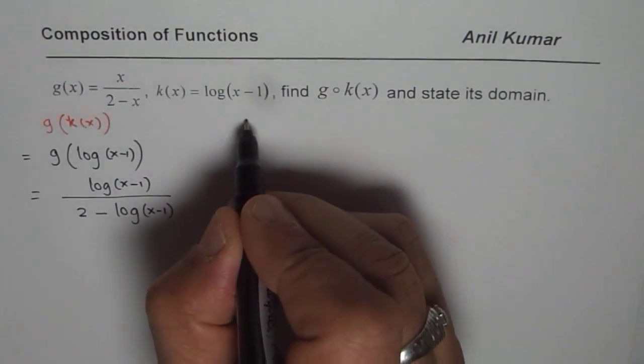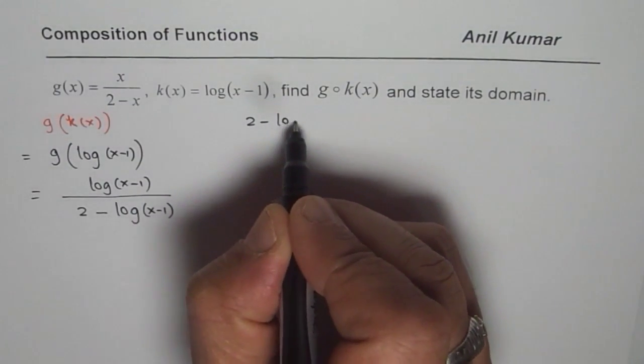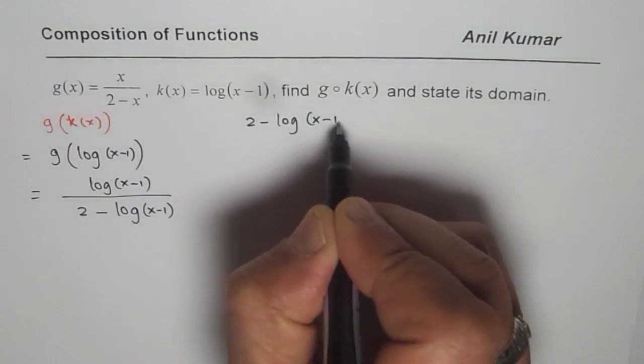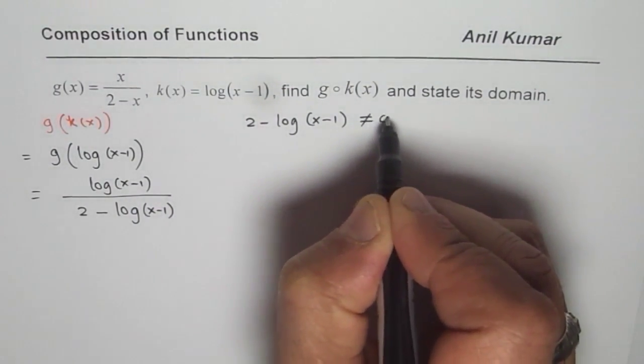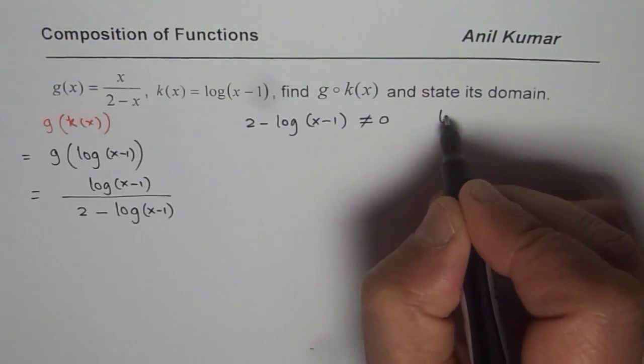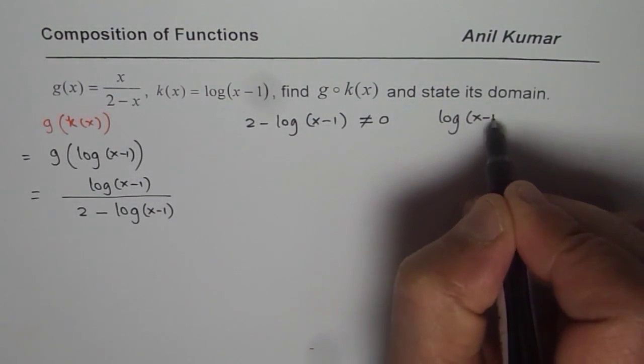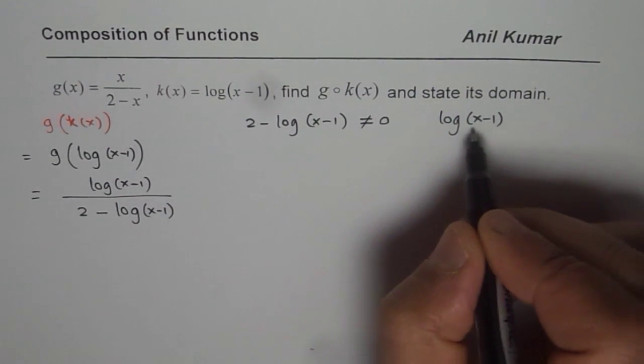One is that the denominator cannot be equal to 0. That means 2 minus log(x-1) is not equal to 0. That is the first part.